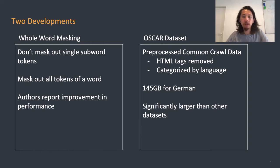With the OSCAR dataset, there's now available a pre-processed Common Crawl dataset. There's been a lot of pre-processing, such as the removal of HTML tags and text being categorized by language. The beauty of this is that it gives us 145 gigabytes of German text data, significantly larger than the other datasets out there.